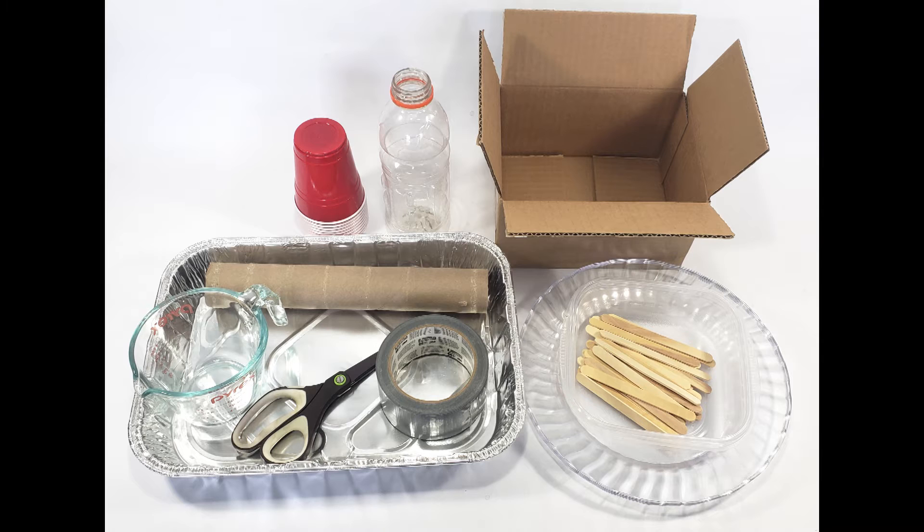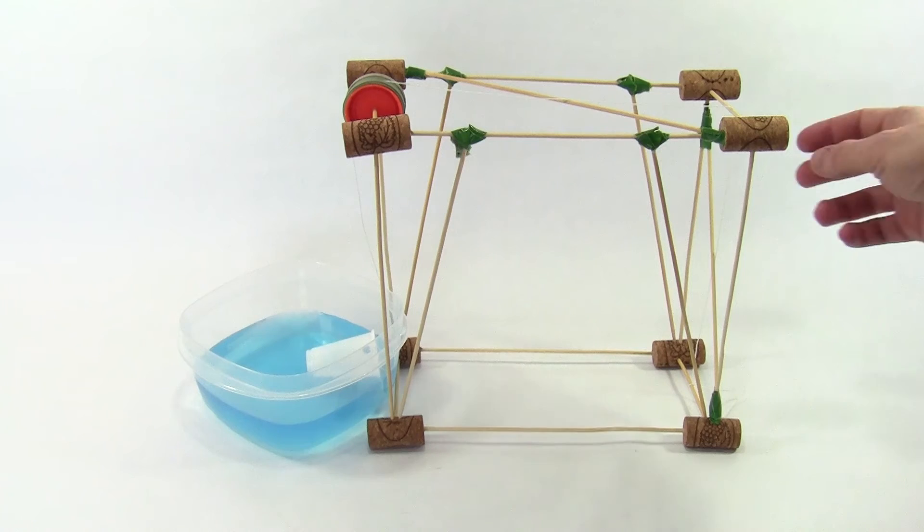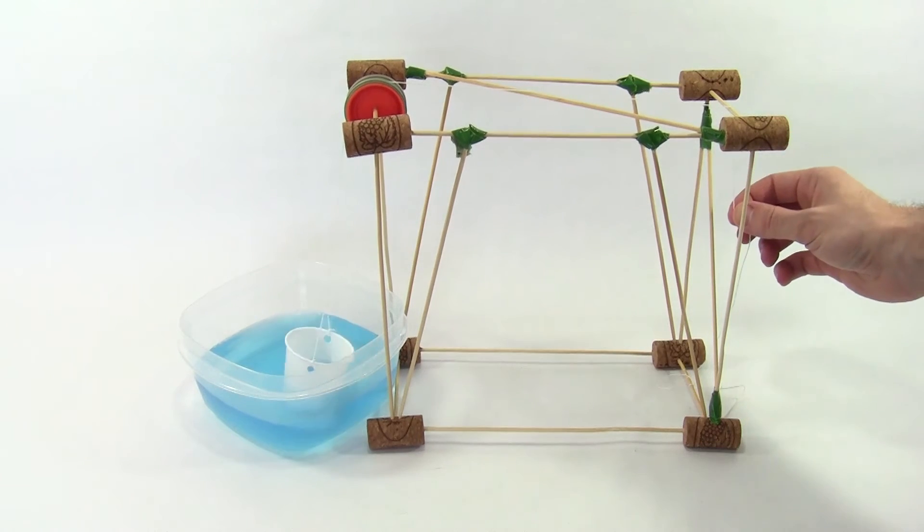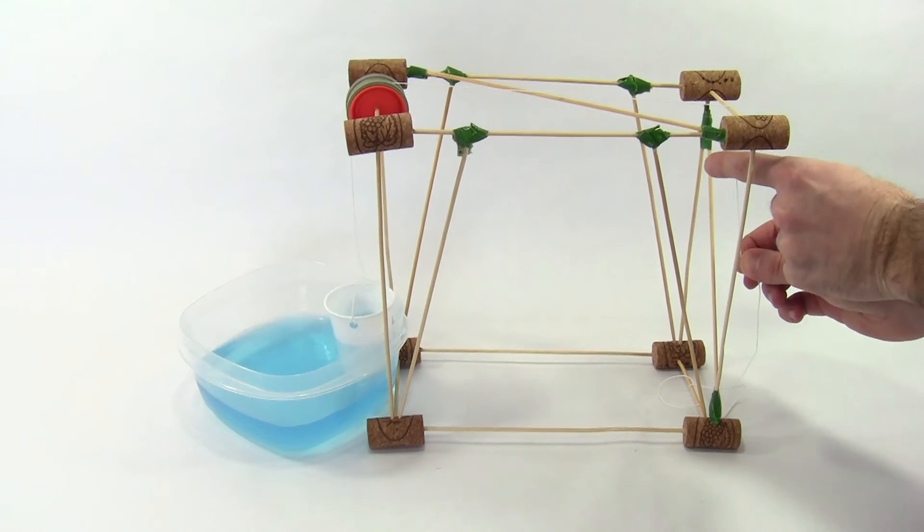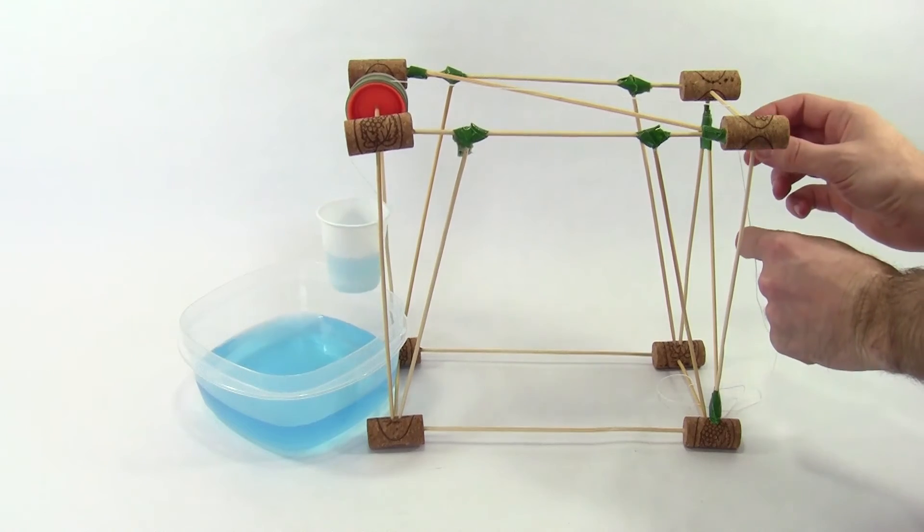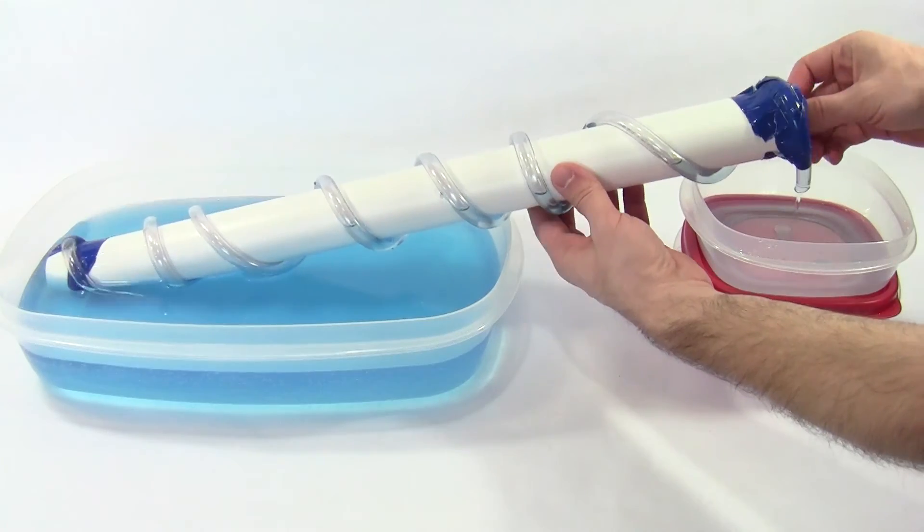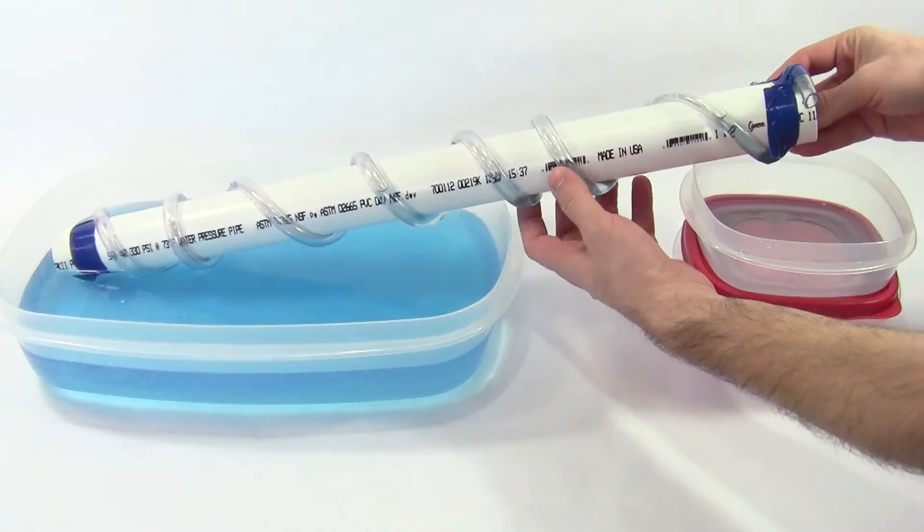In this activity, your goal is to use everyday materials to build a machine that can pump water. You can build a working model of some of the machines seen earlier in this video, like a rope, pulley, and bucket, an Archimedes screw, or a Persian wheel.